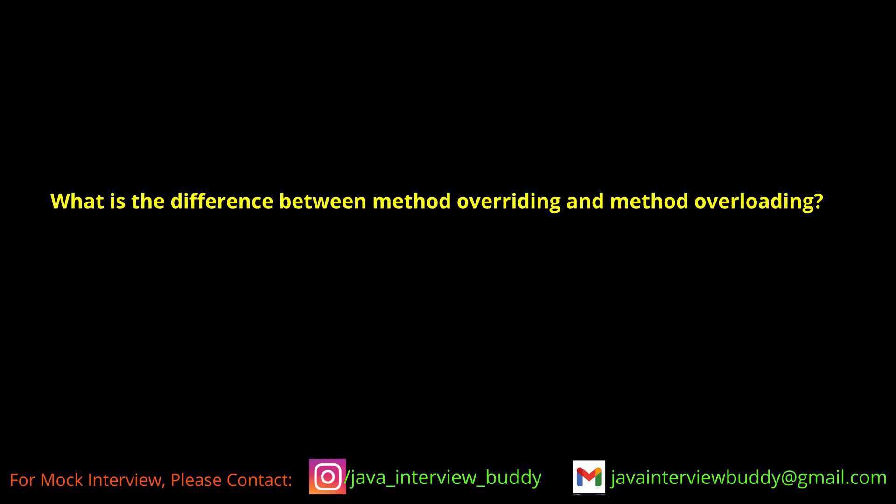Can you tell me the difference between method overloading and method overriding? Both come under polymorphism. Method overloading is static polymorphism, and method overriding is runtime polymorphism. In method overloading, you have the same method name in the same class with a different number of arguments or different argument types. Method overriding comes into play where there is a child and parent relationship — a parent class has a method and the child class has the same method but provides its own implementation.